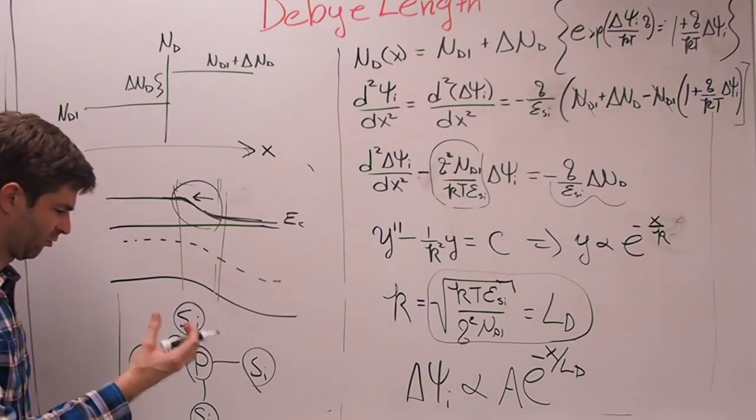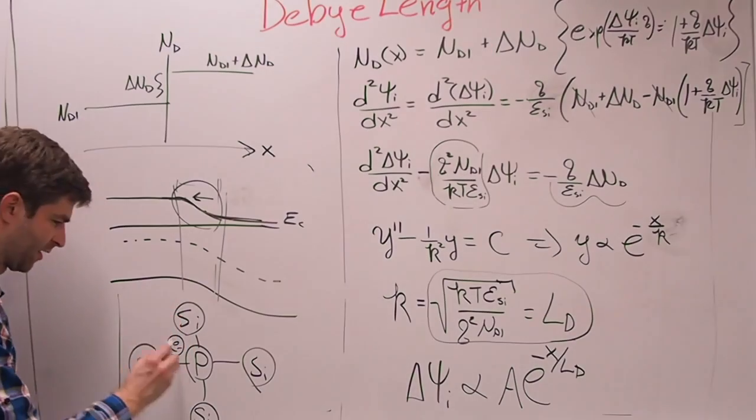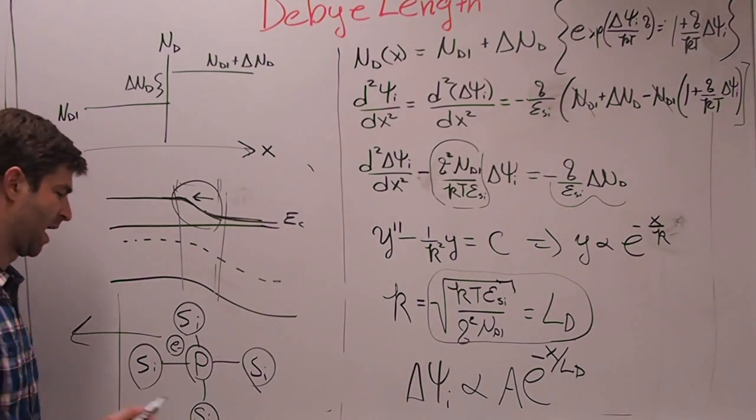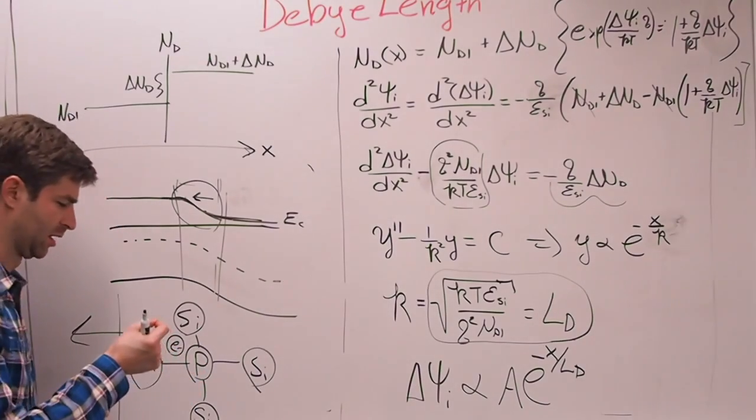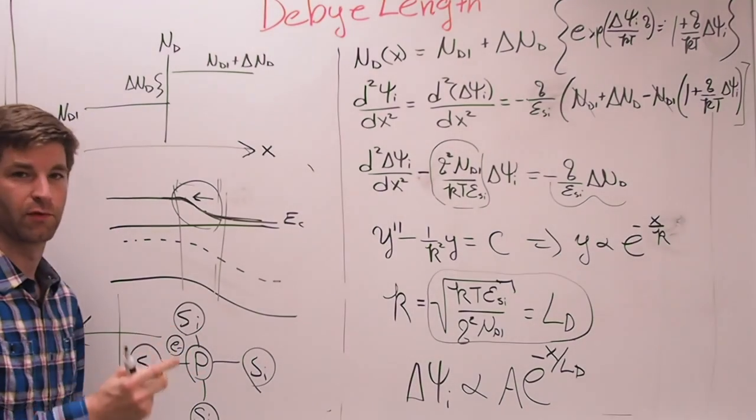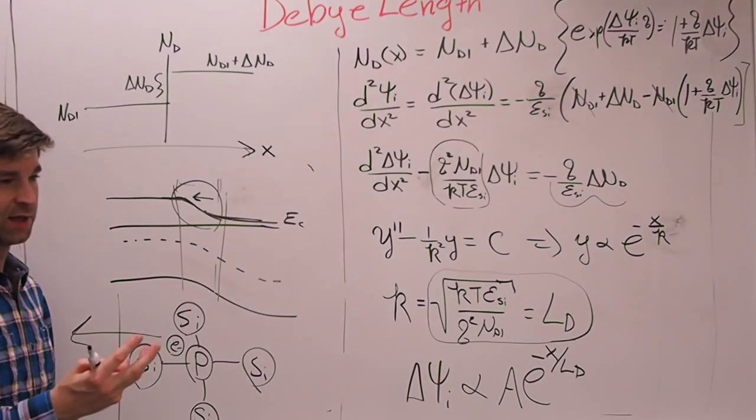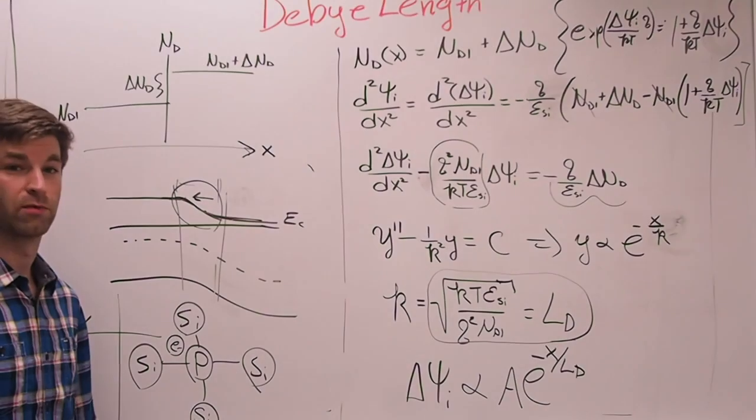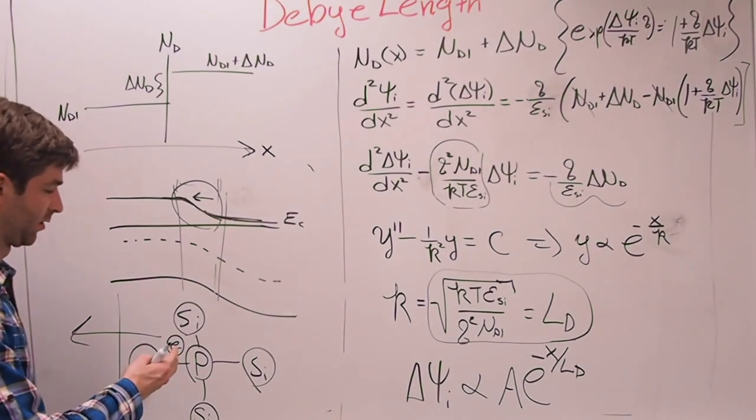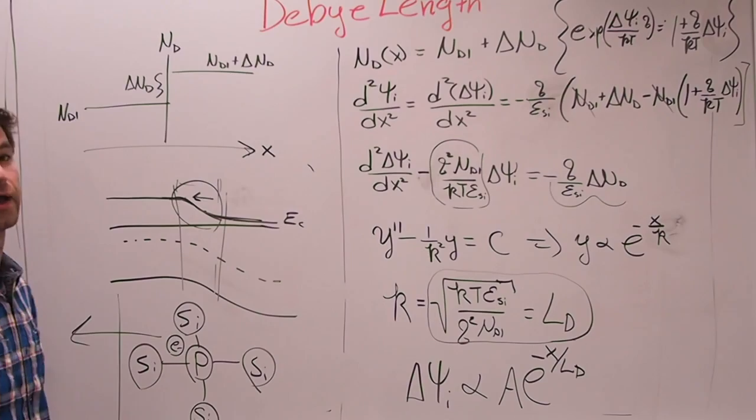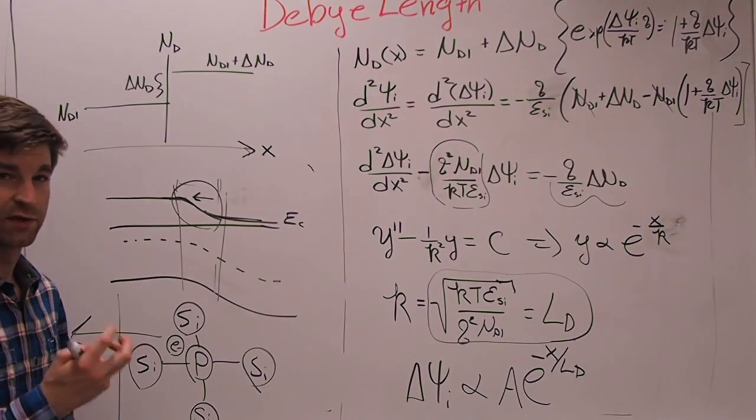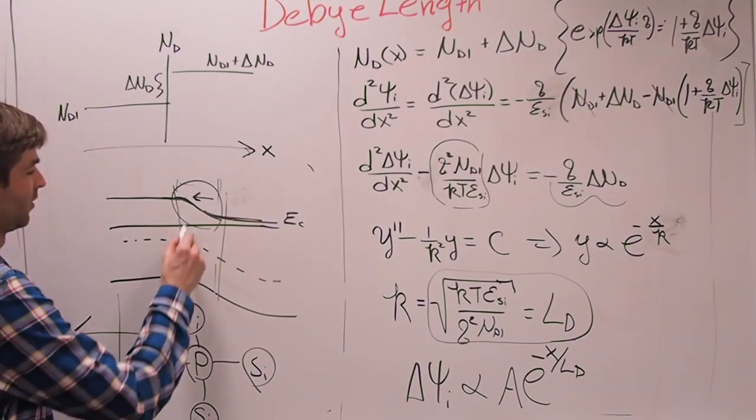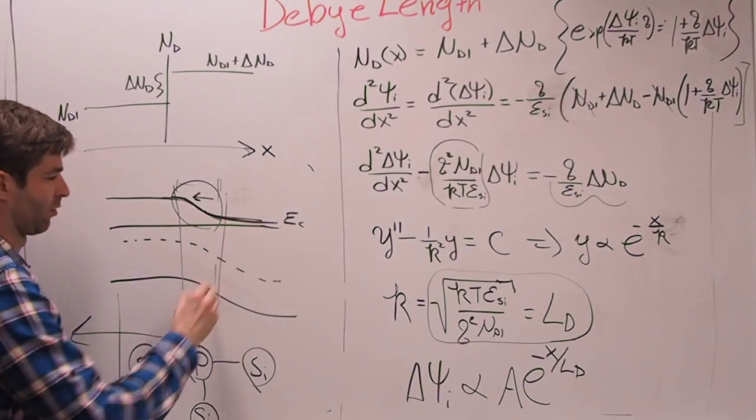But at the same time, the electron wants to move from this area of high concentration to low concentration here. So with this, there's this battle between the force between the atom and the electron and the force of diffusion, the need to diffuse over to the low concentration region. And the result in this gives rise to the Debye length, which is like a dielectric-like region, because it's depleted of free carriers, and that results in this change in our band structure right here.